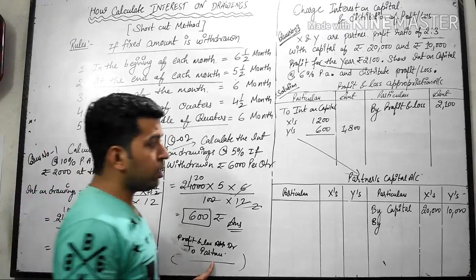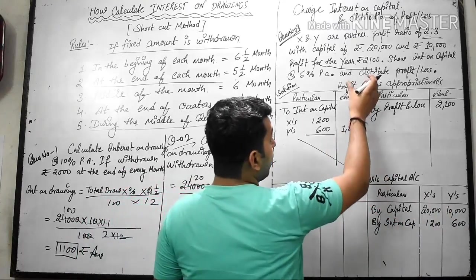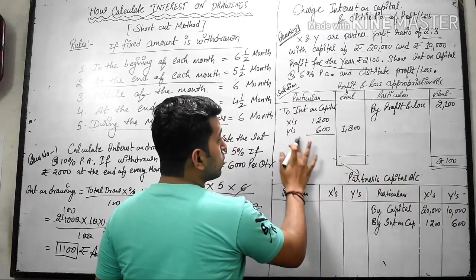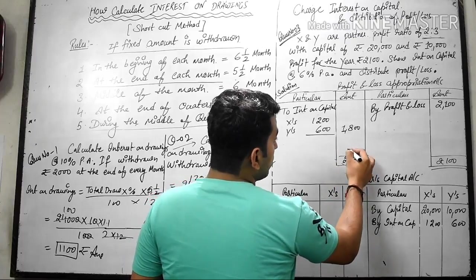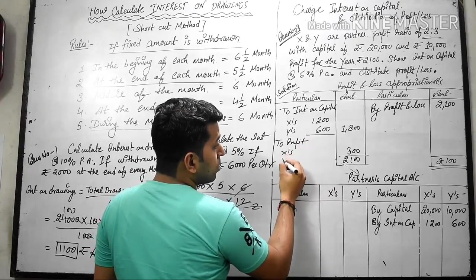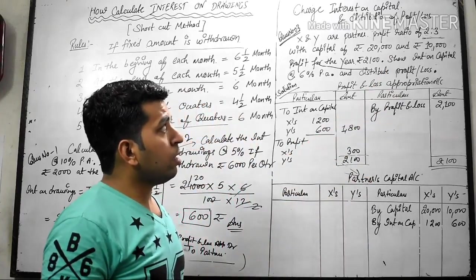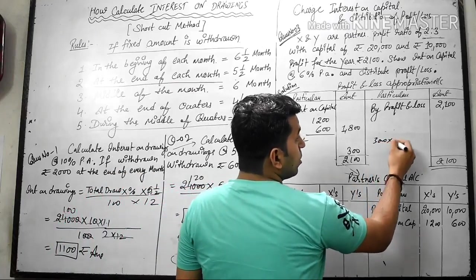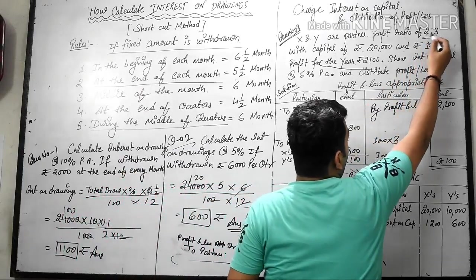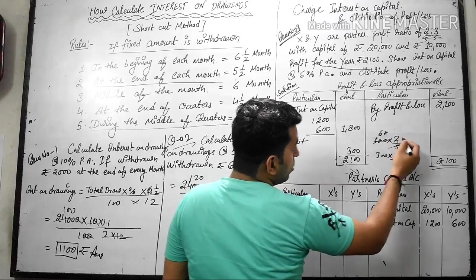Okay guys, so this entry goes here. On debit side write interest on capital for both X and Y. Now 6% rate, so whatever their capital, calculate. 20,000 का 6% is 1,200. 10,000 का 6% is 600. So total becomes 1,800. This interest on capital will be cross posted here. Everyone knows this is ledger to ledger posting. If you write here, you write there. Because you made this entry, it goes to partners' accounts. You can see, initially 2,100 total profit was there, but after charging interest on capital we have only 300 profit.